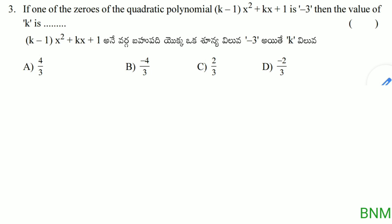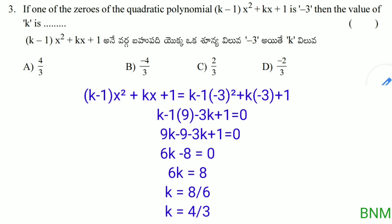Next: if one of the zeros of the quadratic polynomial (k minus 1)x squared plus kx plus 1 is minus 3, then find the value of k. Substituting x equal to minus 3: (k minus 1) times 9 plus k times (minus 3) plus 1 equals 0. So 9k minus 9 minus 3k plus 1 equals 0, giving 6k minus 8 equals 0, so 6k equals 8, and k equals 4 by 3. That is the right answer.